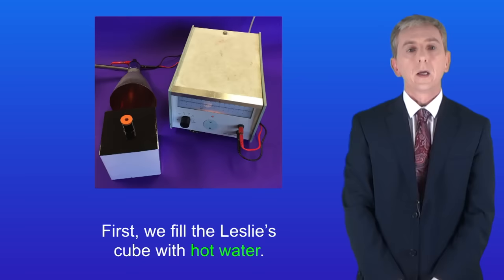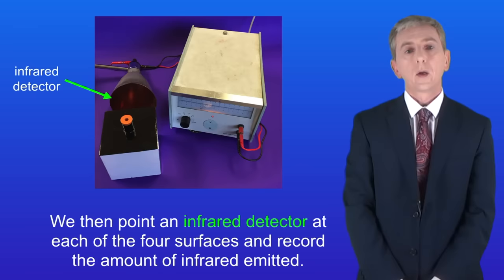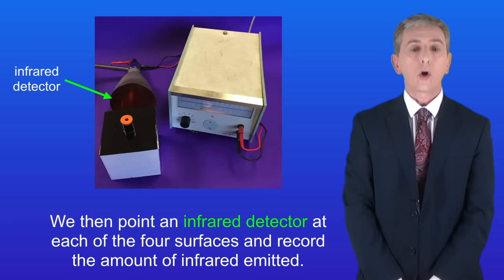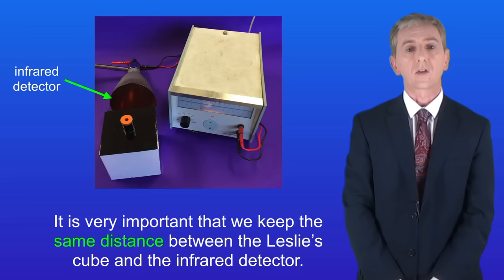First we fill the Leslie's Cube with hot water. We then point an infrared detector at each of the four surfaces and record the amount of infrared emitted. It's very important that we keep the same distance between the Leslie's Cube and the infrared detector, as this makes the measurements repeatable.